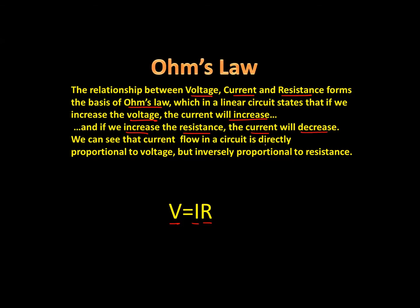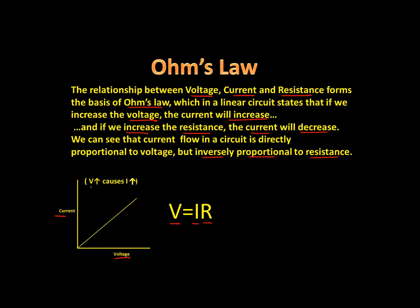Current flow in a circuit is directly proportional to voltage but inversely proportional to resistance. Going back to the two graphs: the first graph showed current versus voltage, and we could see that direct relationship — as voltage increases, the current also increases. In the second graph, as resistance increased, the sloping line shows that current decreases. Increase the resistance, decrease the current — it's actually pretty logical.